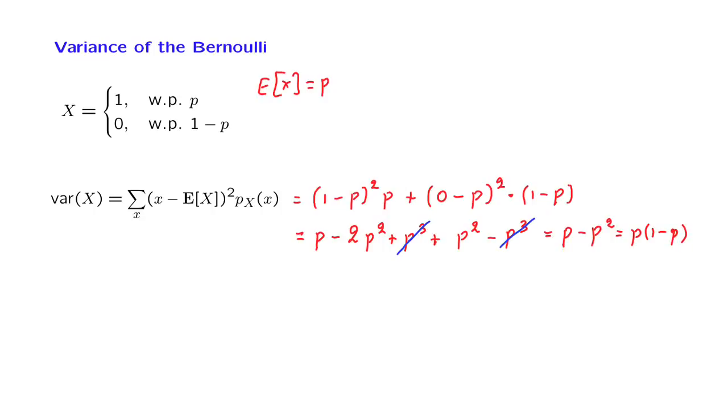An alternative calculation uses the formula that we provided a little earlier. Let's see how this will go. We have the following observation: the random variable X squared and the random variable X, they are one and the same.